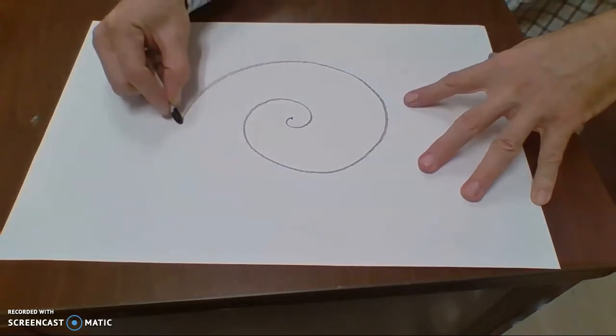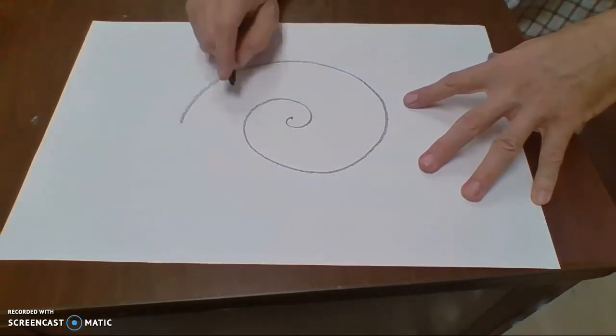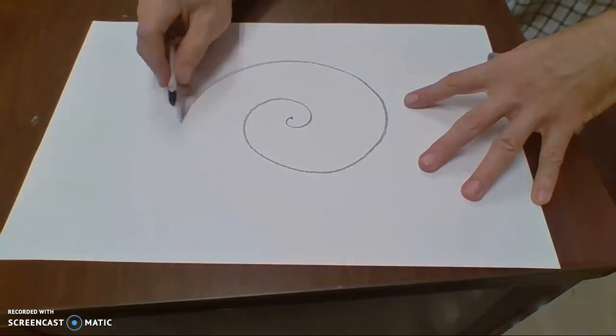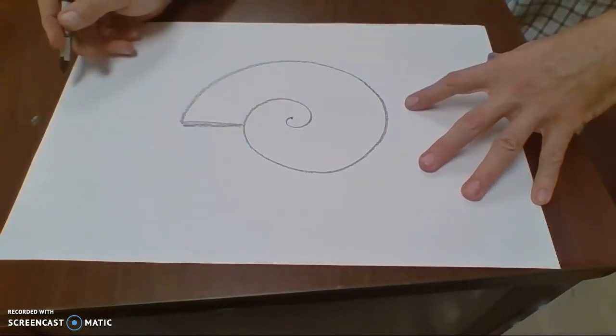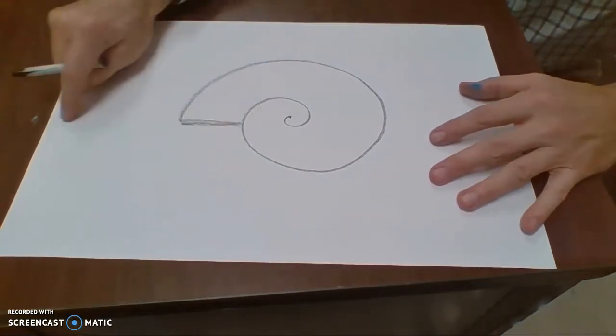When you get to about the middle, right here, that's where you're going to stop. You don't want to bring this down here. You want to stop somewhere right here in the middle, and then close up your little shell. There we go. It's a good little place to stop, or it's right here.